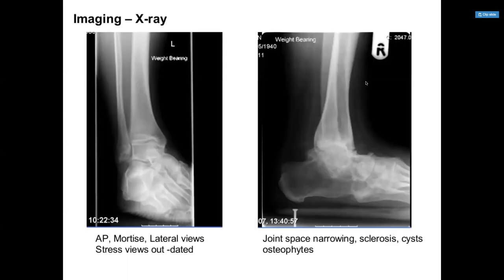X-rays are important. We always get a weight-bearing X-ray. On weight-bearing lateral view, you can see collapse of the tibiotalar joint and subtalar joint, as well as changes in the talonavicular joint — especially osteophytes in front of the talar neck. It is important to appreciate this because talonavicular joint pain can be more persistent and prominent, making it difficult to distinguish from ankle pain.